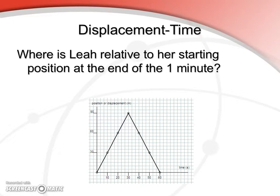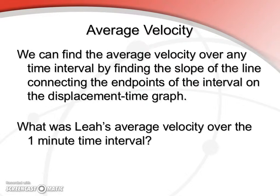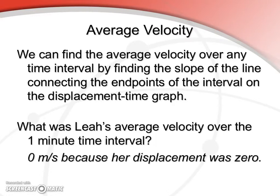And of course, Leah's at zero displacement at the end of one minute, as we would expect at her starting point. Okay, but we can find the average velocity over any time interval by taking the slope from the displacement-time graph. So please go ahead and determine the average velocity over the one minute time interval. And hopefully you've got zero meters per second. Since the displacement was zero, that divided by the 60 seconds is zero meters per second.